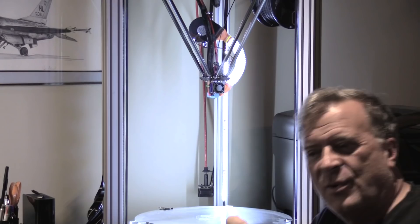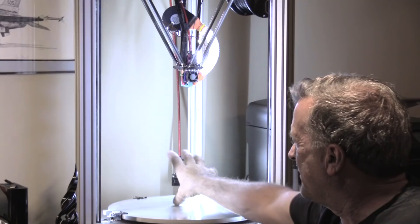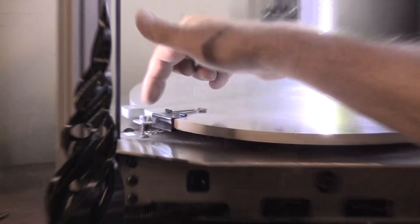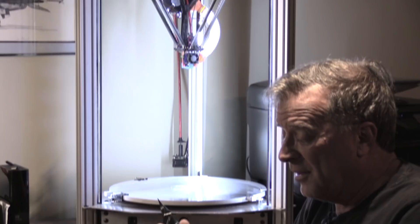So rather than have the whole motor hanging up here like the 250 did, where now you have to compensate for that inertia as the head is moving back and forth, this helps get the weight out of there. It makes this lighter and it makes for a much more uniform print.